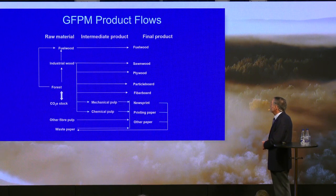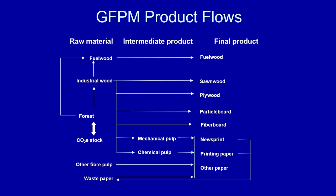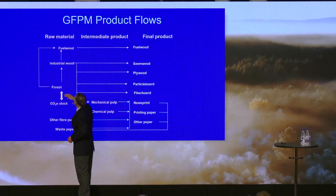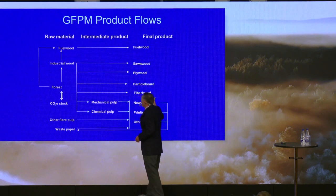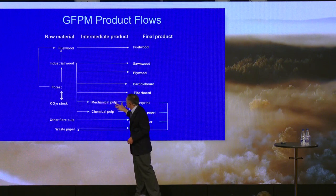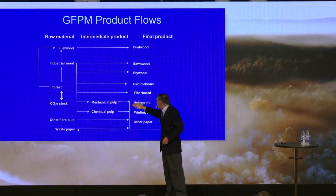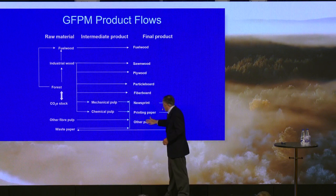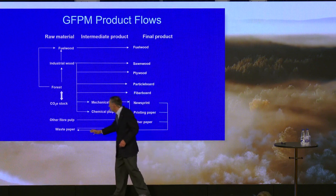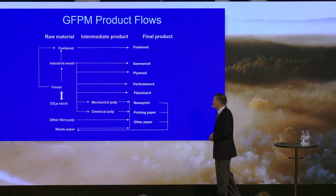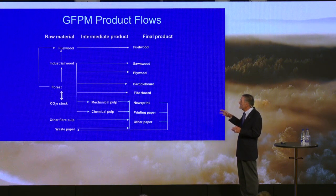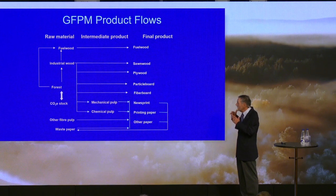This slide shows the general structure of the model within a particular country. We start from the stock of trees in the forest. From it we can derive industrial wood or fuel wood. With industrial wood, we can make sawnwood, plywood, particle board, fiber board, or intermediate products like mechanical pulp and chemical pulp, with which we make newsprint, printing and writing paper, and other paper and paperboard. We can also recycle part of those goods and combine with other pulp to produce more paper and paperboard. This flow of products is described mathematically within each of the 180 countries, and we try to see how this flow moves over time.